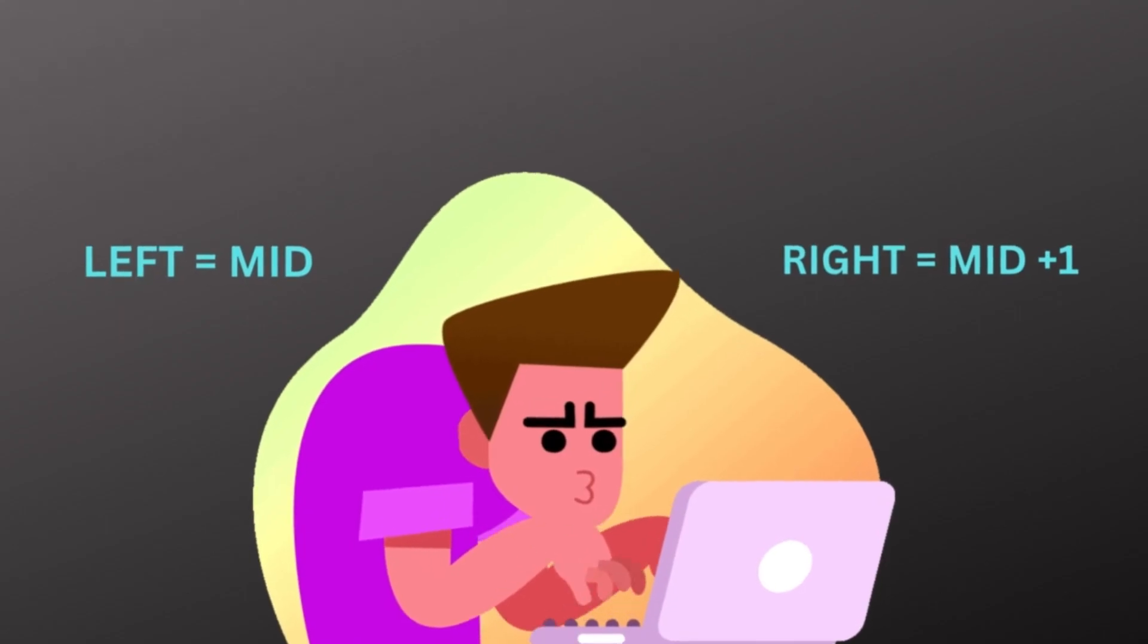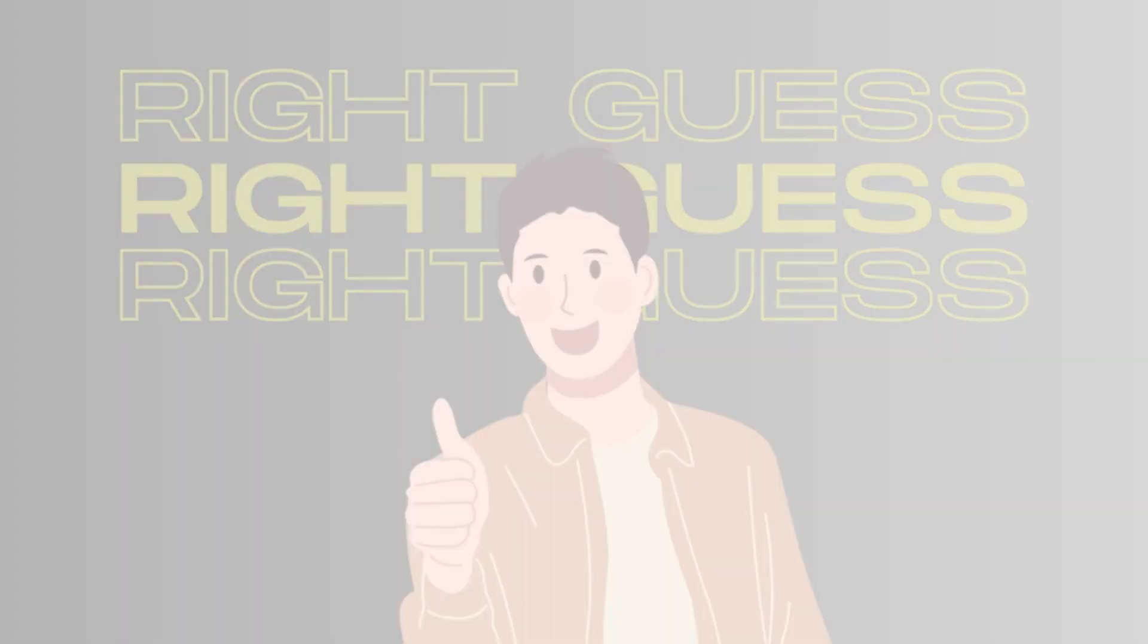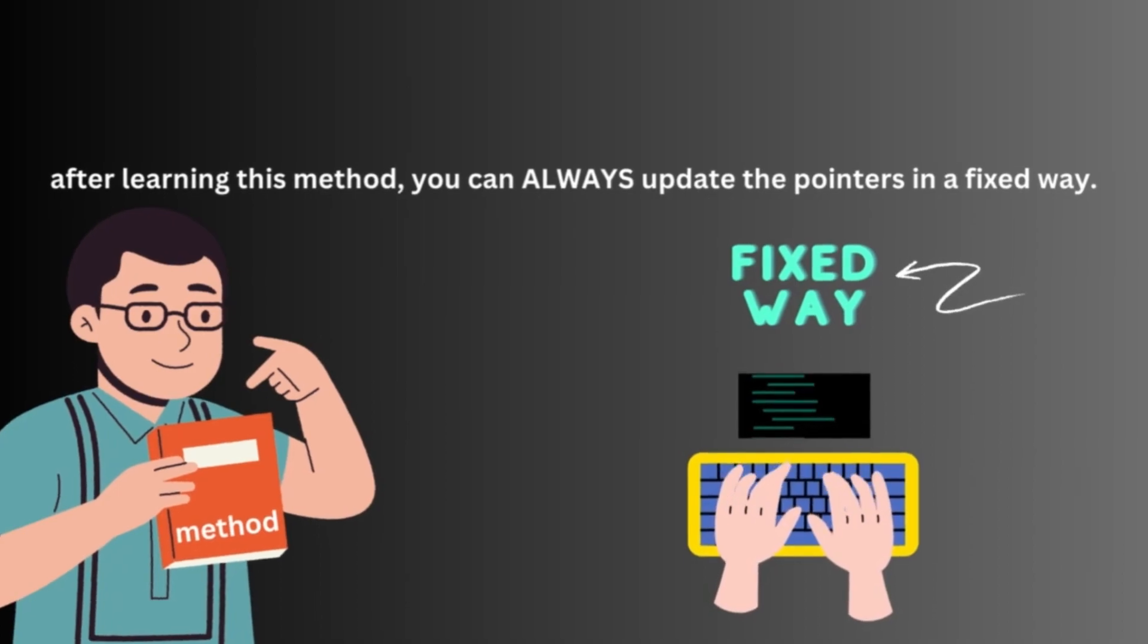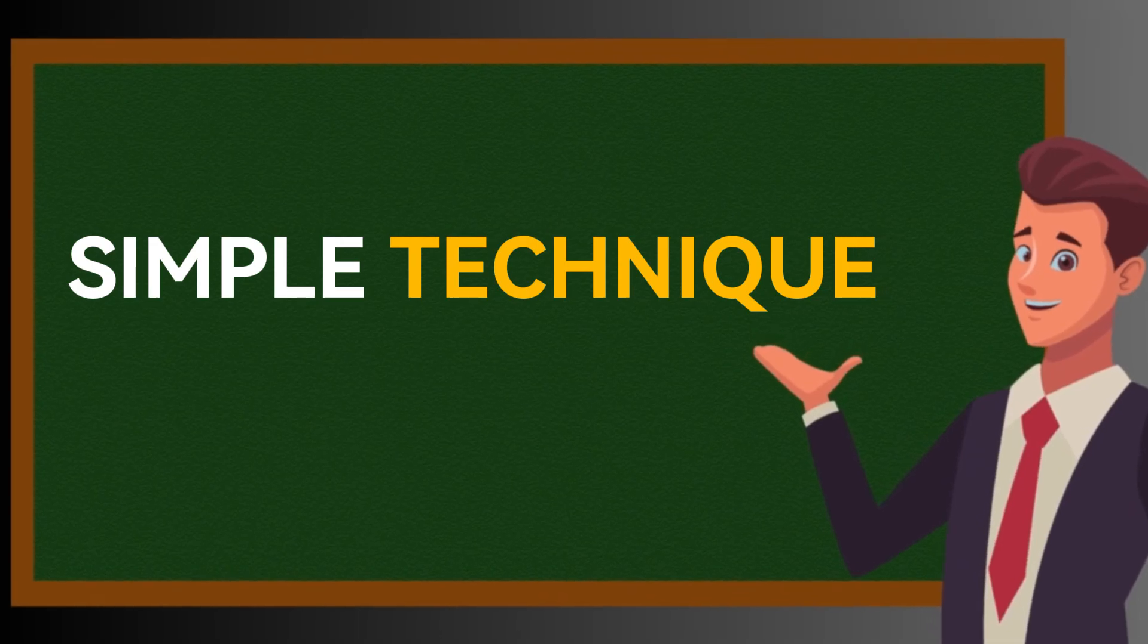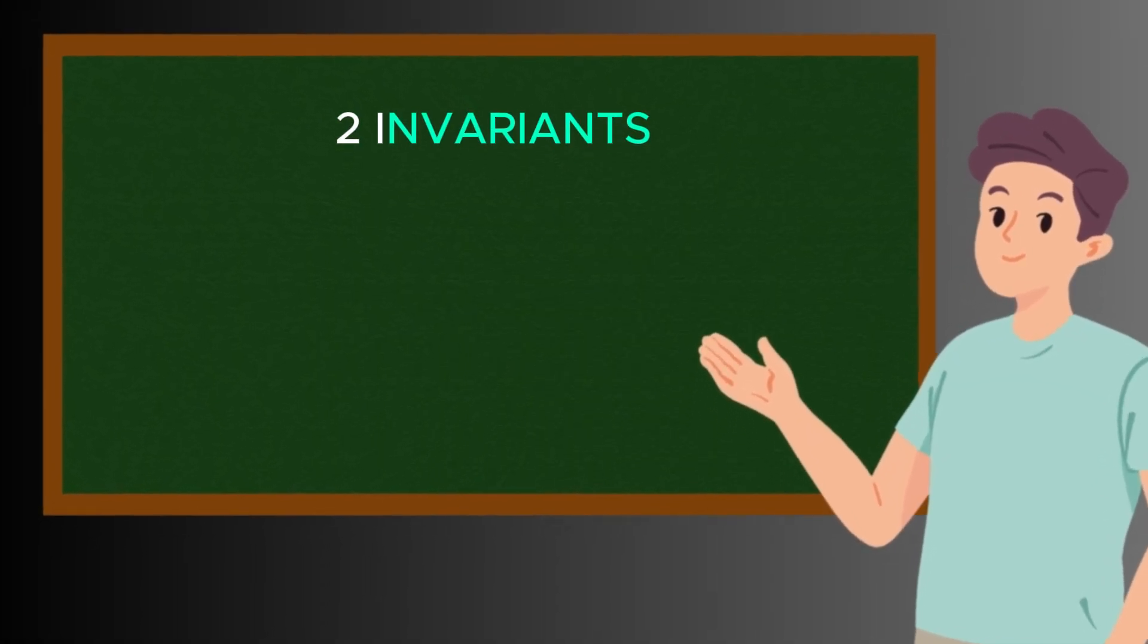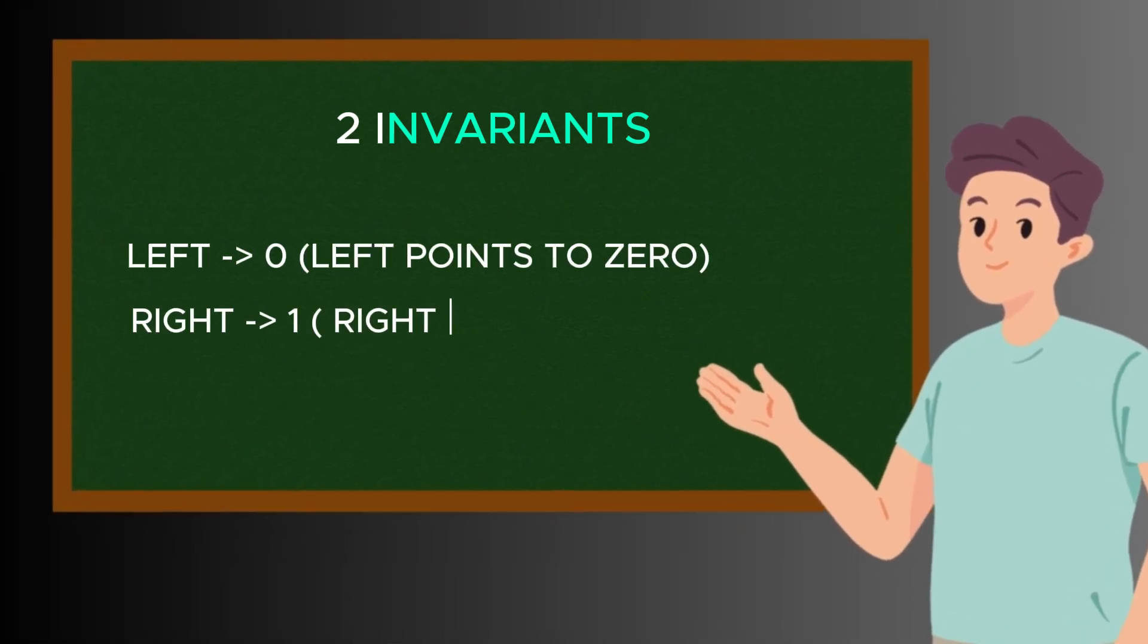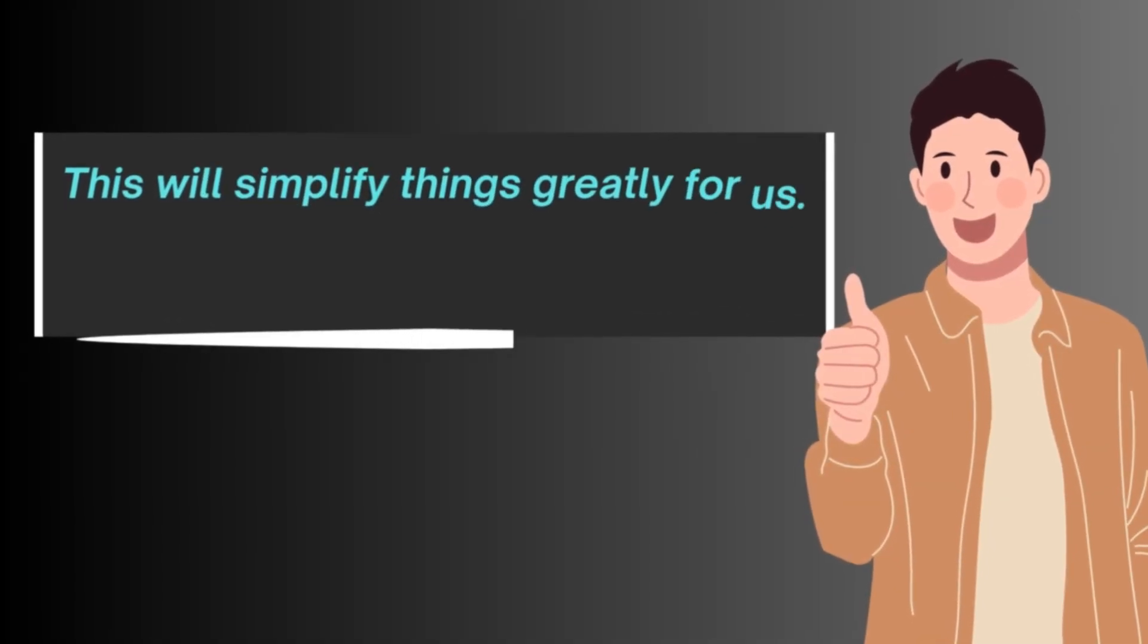But what if I told you that you can always use the same exit condition? On top of this, inside the loop, people also have trouble in updating the values of these pointers. Sometimes we need to update left is equal to mid, sometimes right is equal to mid plus 1, so on and so forth. Well, you guessed it right. After learning this method, you can always update the pointers in a fixed way. The technique is surprisingly very simple. So, what we will do is, we will maintain two invariants.